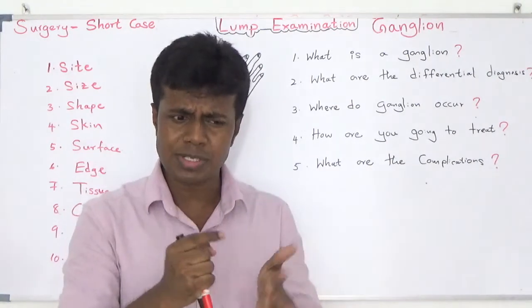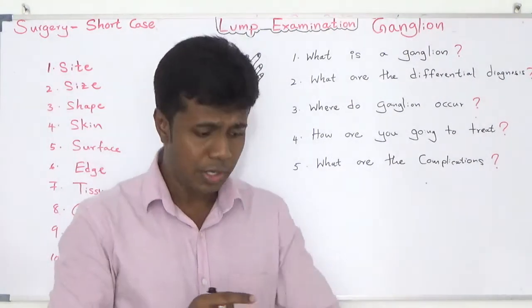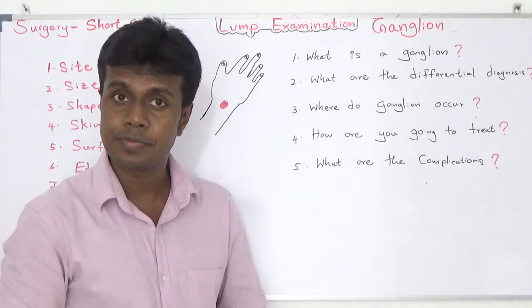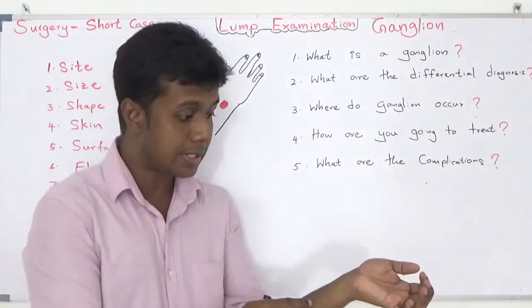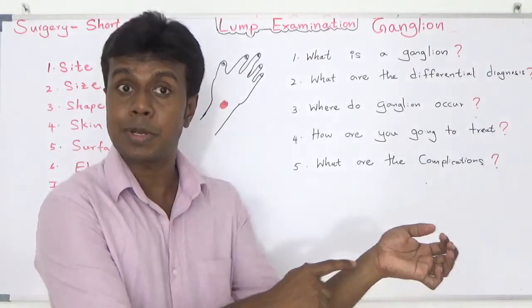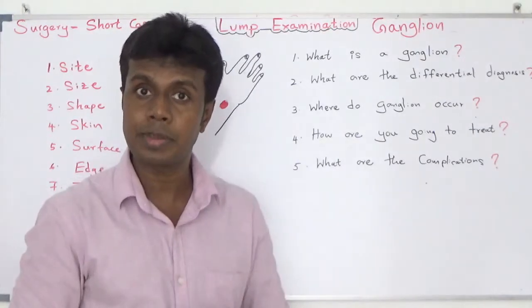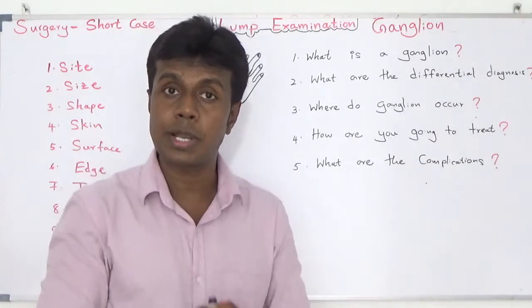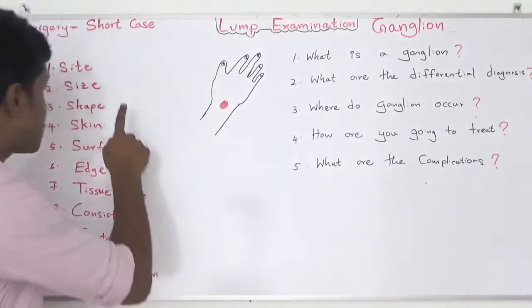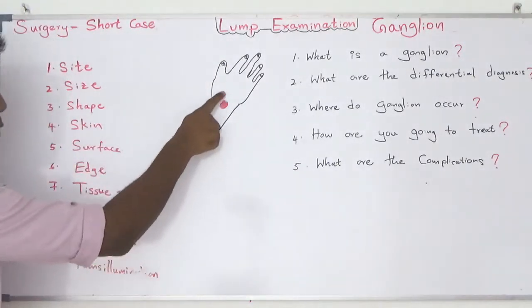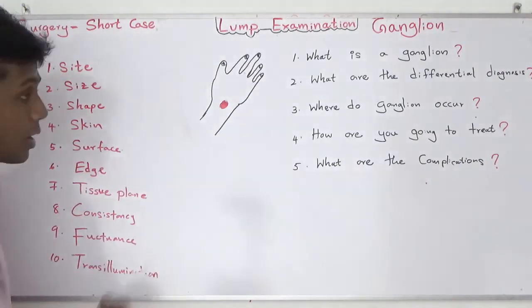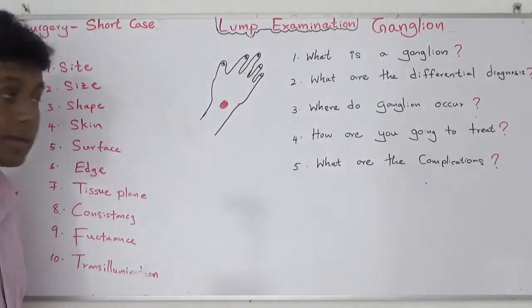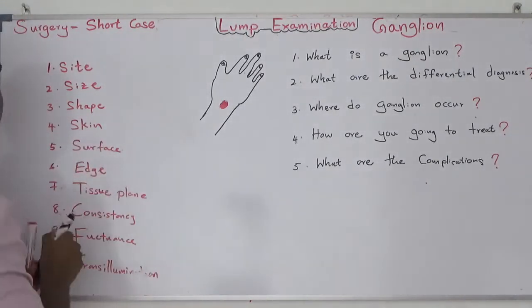What are the most common sites to have a ganglion? The dorsal aspect of the hand, the ventral aspect of the hand, the flexor distal aspect of the forearm, and the ankle. Those are the most common sites to have a ganglion.